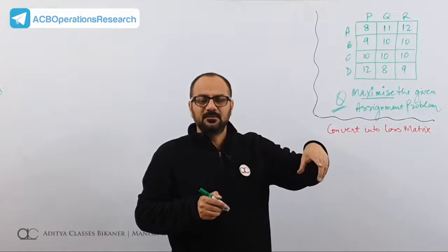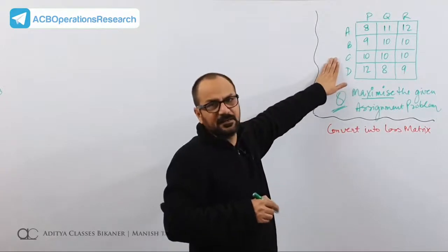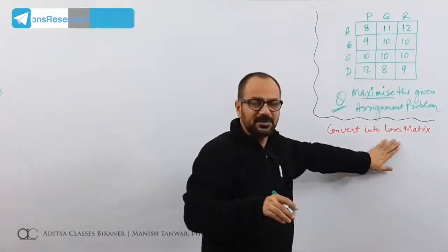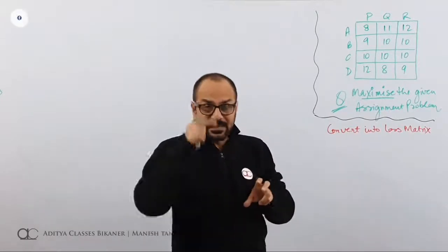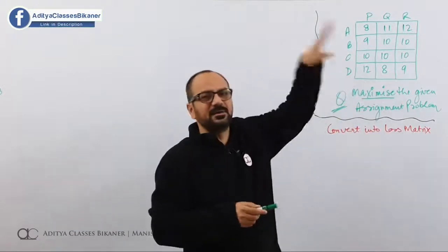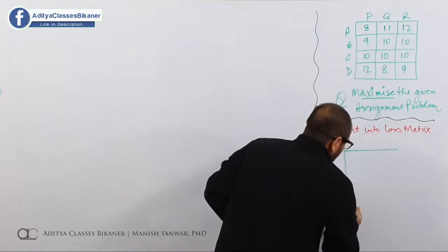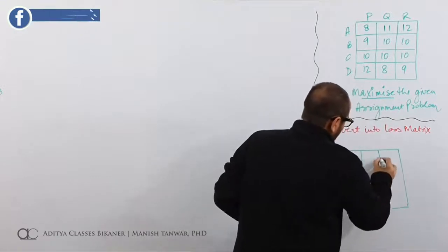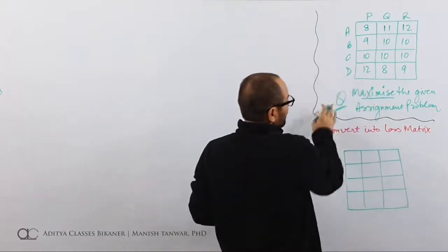So first check if this can be solved: it is a maximization, and it cannot be solved using Hungarian method. So I will convert it into a loss matrix. Then it will be a loss matrix and yes, Hungarian method can minimize losses. The assignment process will start there. Right now I am only reformulating my problem — formulating my profit matrix as a loss matrix. We have done this maximization conversion in previous lectures also.